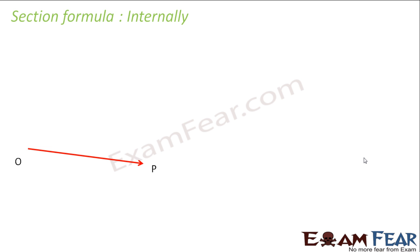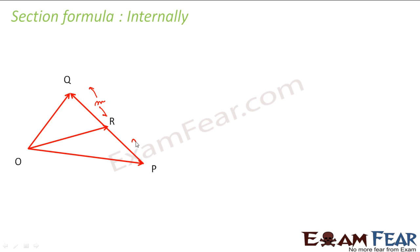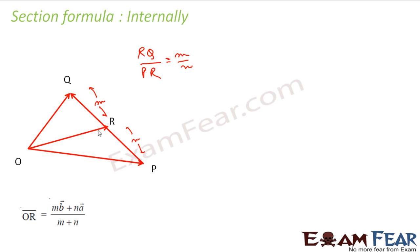We have vector P, vector Q, and we draw vector PQ. Let us take a point R internally and divide PQ internally. We assume that RQ by PR is M to N — both vectors are in the same direction. So in this case, my OR vector, which divides this line internally in ratio M to N, will be M into B vector plus N into A vector, all divided by M plus N.